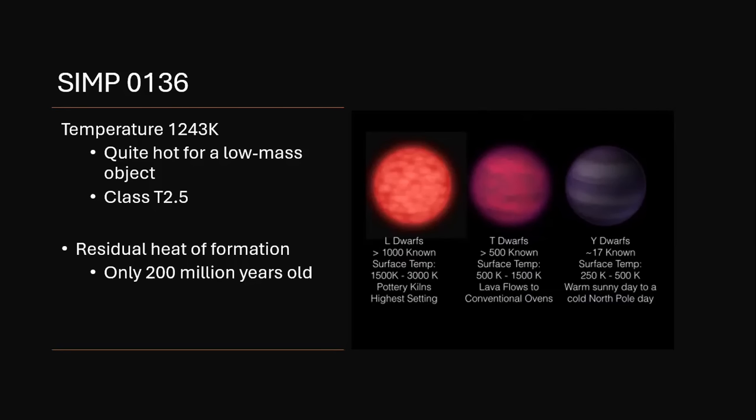You can see that a T dwarf is in the range 500 to 1500 Kelvin. And this one at 1243 is towards the hotter end of the T range. So classed as T2.5. The numbers after the letter go T0 for the very hottest T type down to T9, which would be the coolest. So this is quite hot for such a low mass object.